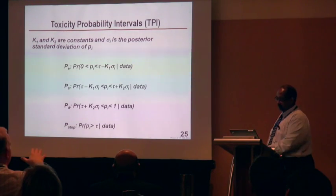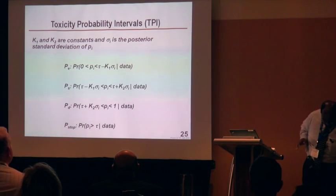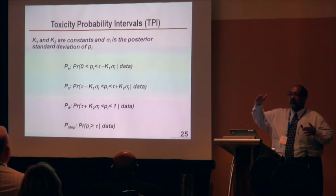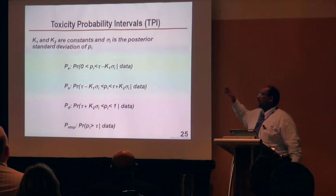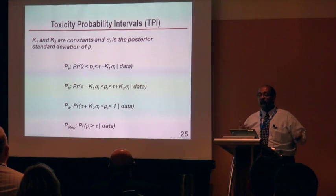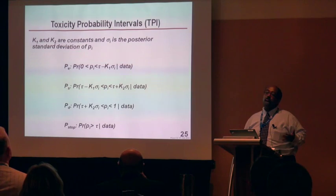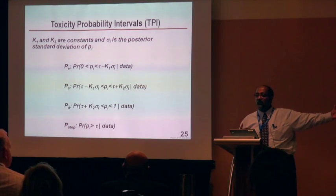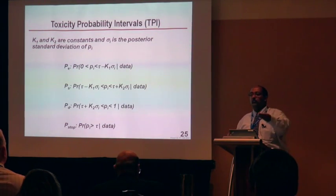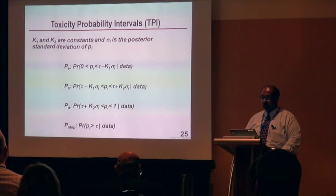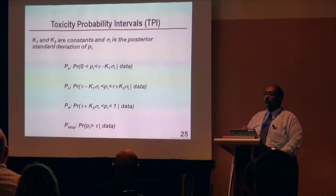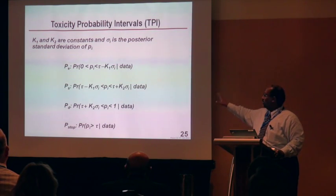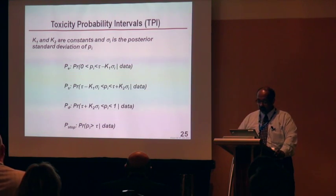The same prior is used for each dose, though theoretically you don't have to do that — if you knew doses were escalating, you could use different priors. We found that prior had the best operating characteristics for the various scenarios we examined. If you had toxicity information from other studies, you could use that to inform the prior, as in any Bayesian analysis. But in practice, 99.99% of users won't be changing the prior.